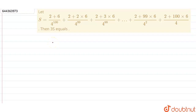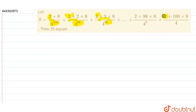In this question, S is given as 2 plus 6 upon 4 to the power 100, plus 2 plus 2 times 6 upon 4 to the power 99, up till 2 plus 100 times 6 upon 4. We have to calculate the value of 3 times S. Consider the part: 2 upon 4 to the power 100, plus 2 upon 4 to the power 99, plus 2 upon 4 to the power 98, and so on up till 2 upon 4.